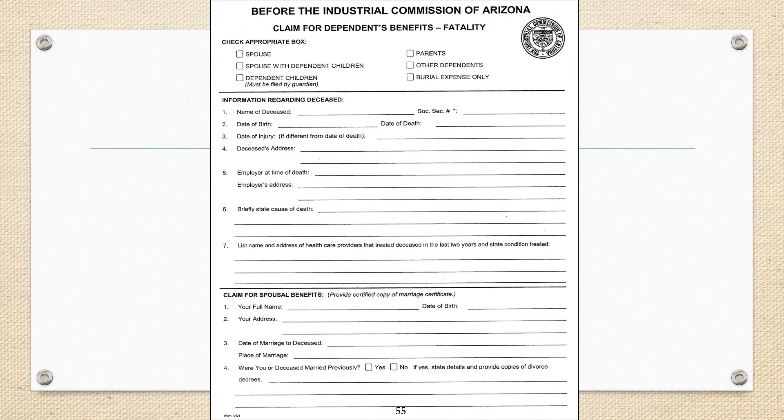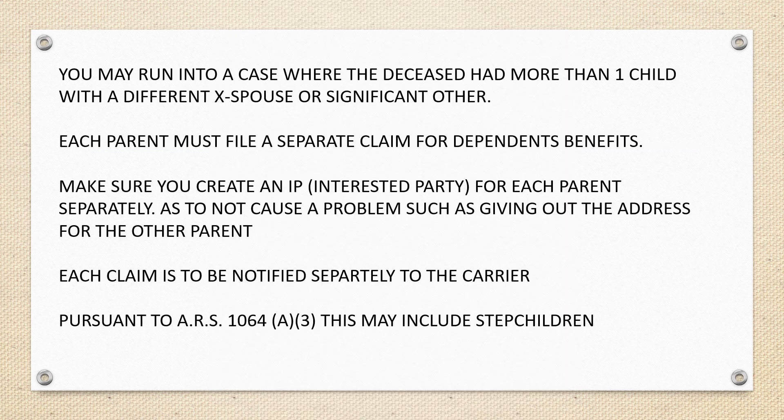The form can be found on our website or it will be mailed to the personal representative once we receive the fatality report. Who can file: spouse, spouse with dependents, dependent children including stepchildren if they were being fully supported by the deceased, and parents if they were being supported by the deceased. If the deceased had more than one child with a different ex-spouse or significant other, each parent must file a separate claim for dependent benefits. Make sure you create an interested party for each parent separately so as not to give out the address of the other parent. Each claim is to be notified separately to the carrier.